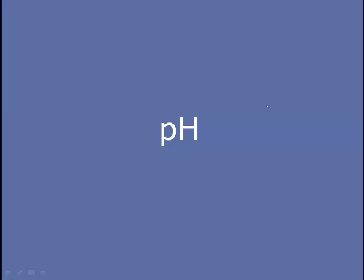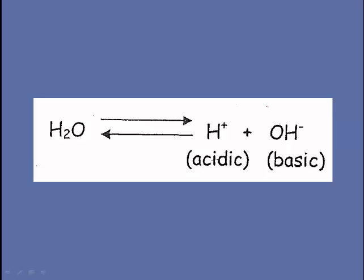pH simply stands for the power of hydrogen. It's a measure of how acidic or basic a solution is. Water molecules tend to dissociate. Even though water is covalently bonded, a small number of these molecules will actually dissociate in the same way that ions dissociate. You'll get some hydrogen ions and hydroxide ions. Hydrogen ions make a solution more acidic and hydroxide ions make a solution more basic or alkaline.